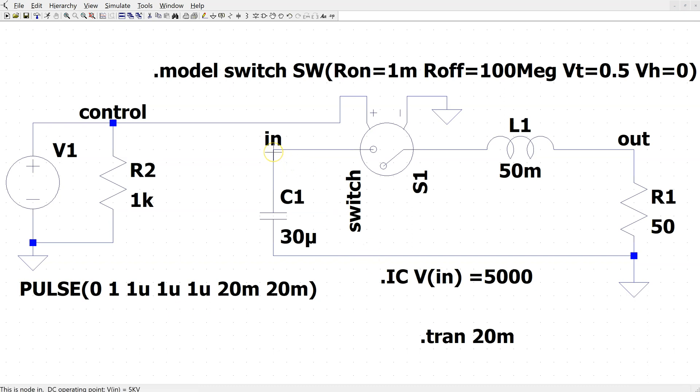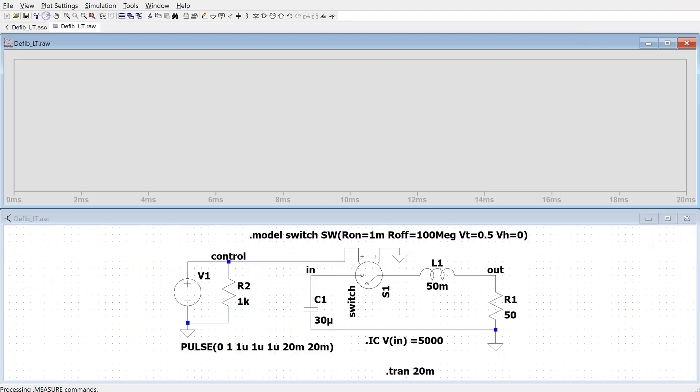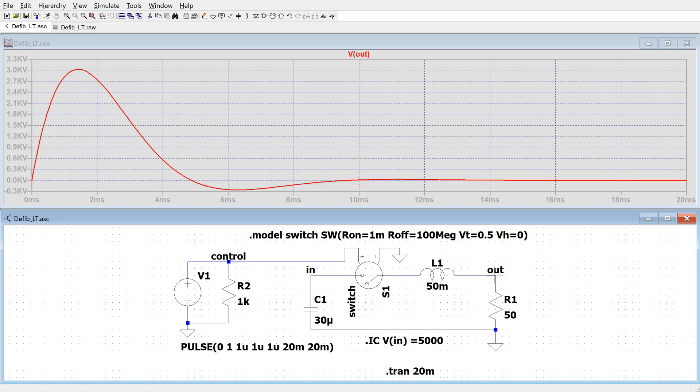We label this node and then use the IC spice directive to define the initial voltage across the capacitor. We are running a transient simulation. We can run this simulation and look at the output voltage.